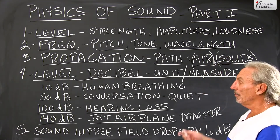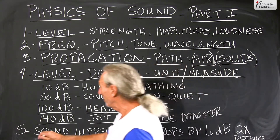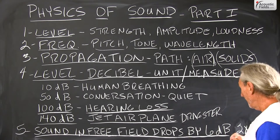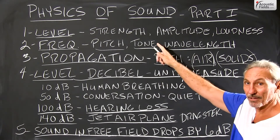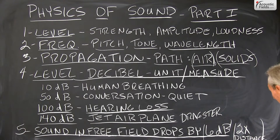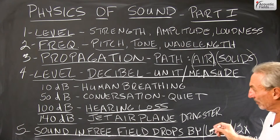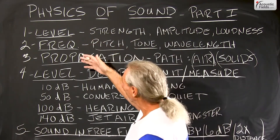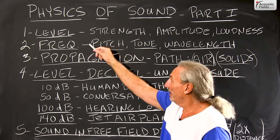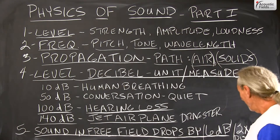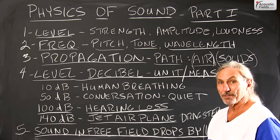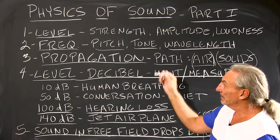What are some of the characteristics about energy? We know that in a free field with no obstruction, the strength drops by 6 dB for every doubling of distance. So each one of these — level, frequency, and propagation — have characteristics. The level or strength of the signal drops 6 dB for every doubling of distance. Keep those characteristics in mind.